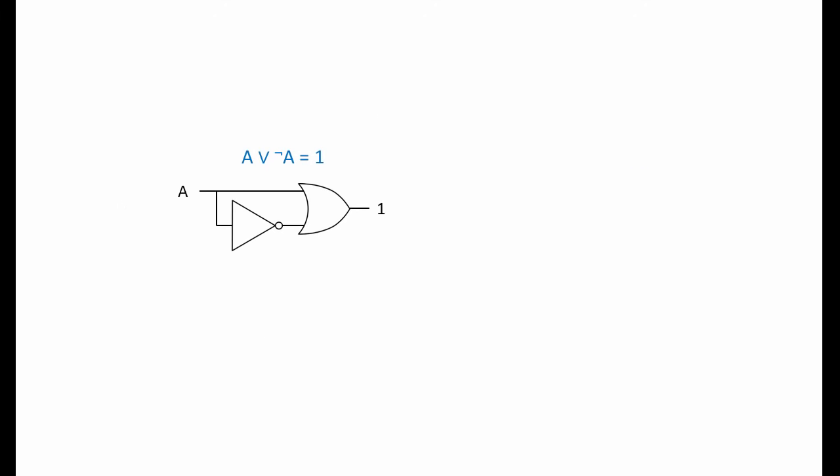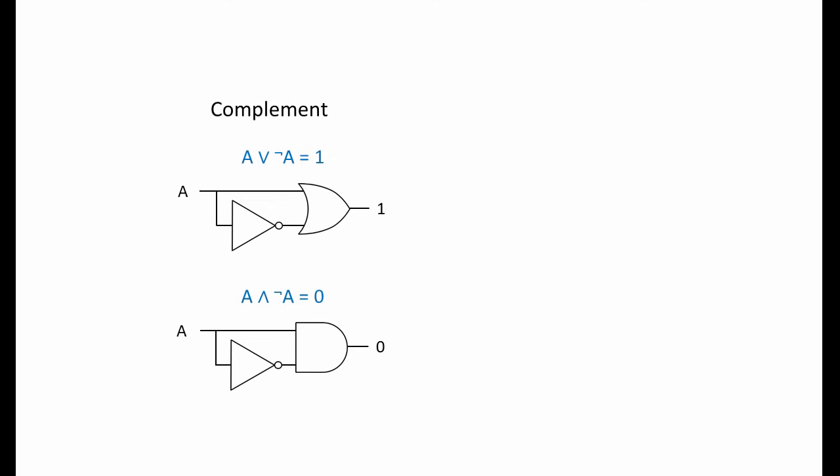The next few laws involve NOT gates. In this combination, the OR gate is being fed input A along with its inverse, so the OR gate is always being fed a 1 and a 0 regardless of the value of A — the output of the OR gate must therefore always be 1. In this combination, the AND gate is being fed input A along with its inverse, so the AND gate is always being fed a 1 and a 0 regardless of what A is — the output must always be 0. Another name for the inverse of a Boolean value is its complement, so these expressions are known as the complement law.